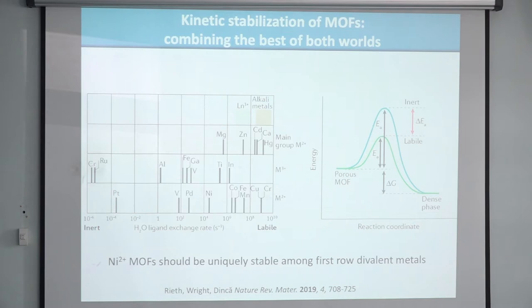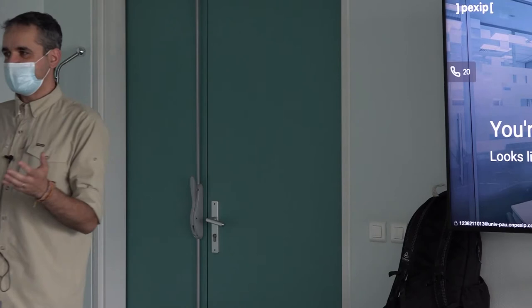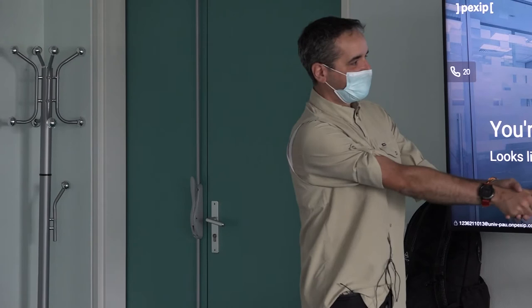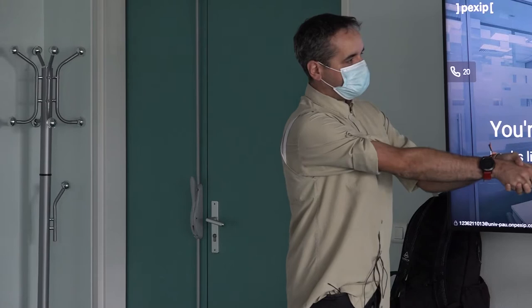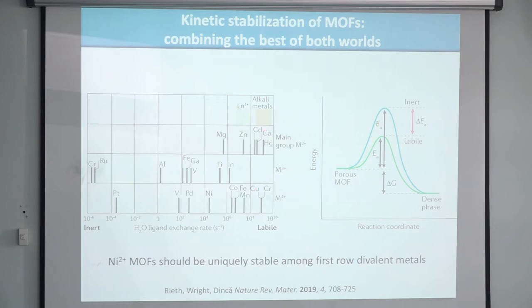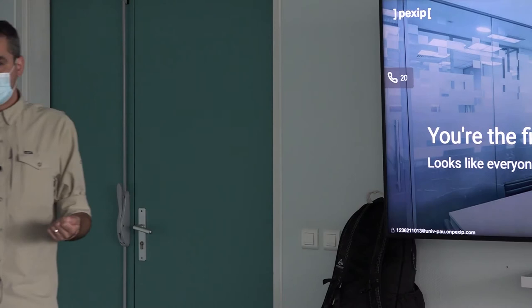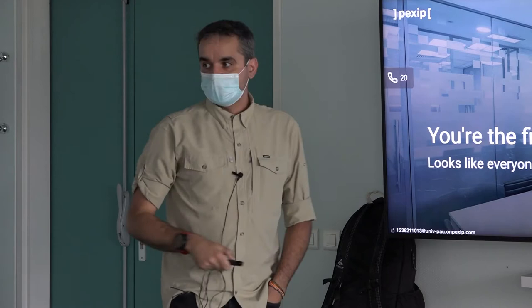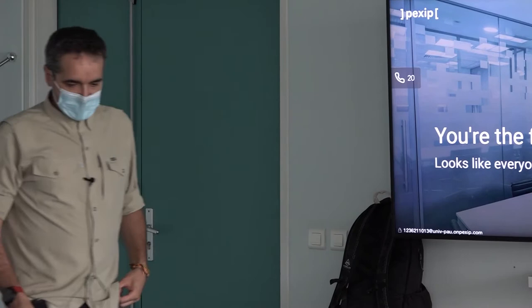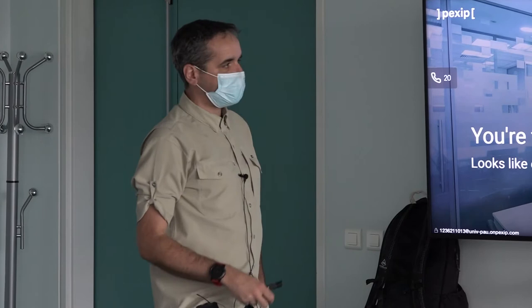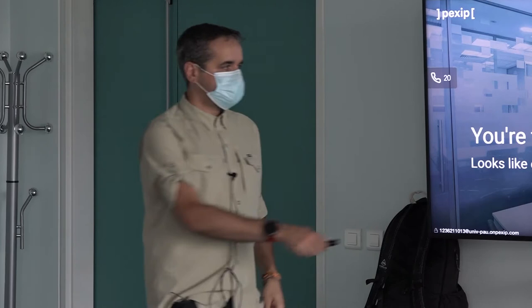Once you realize that, you go back to first-year chemistry and look at the self-exchange of a water molecule on a hexa-aqua complex — one of my favorite reactions because it tells you everything about the kinetics of various metal ions. Things like Cu2+, Ca2+, and Zn2+ are very labile — they exchange really fast — whereas nickel is a million times slower than copper. So if you want to make a kinetically stable MOF, you might want to work with nickel, aluminum, or chromium(III).